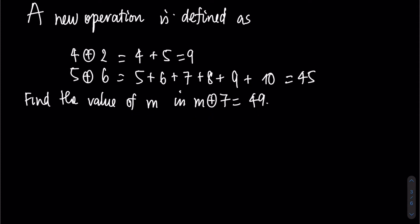As you can see, 4 plus circle 2 means we start our operation by 4, then we have 2 terms including 4, which is 4 plus 5 equal to 9. Similarly, we have 5 plus circle 6, which we need to start by 5, then we need to write 6 terms including 5, which is 5 plus 6 plus until 10 equal to 45.